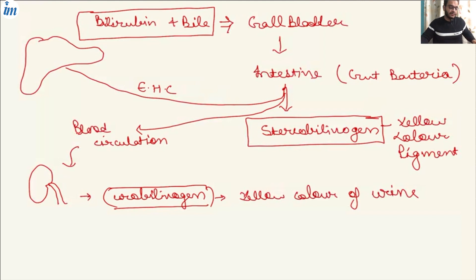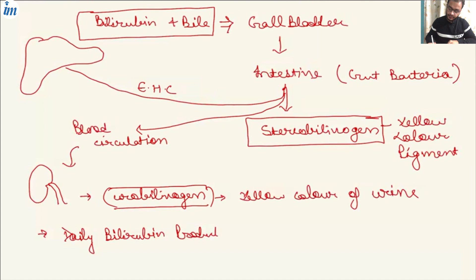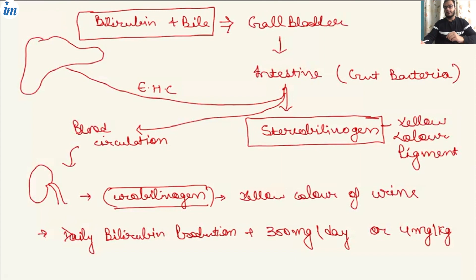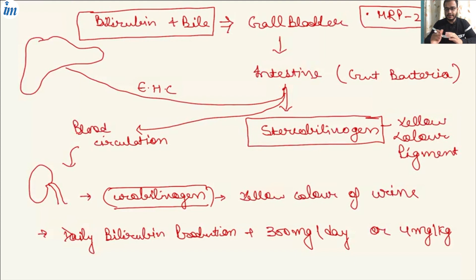Some points to remember: daily bilirubin production is 300 mg per day, or 4 mg per kg per day. Also, when conjugated bilirubin goes along with the bile into the bile ducts and gets stored in the gallbladder, one molecule known as MRP2 helps transport the conjugated bilirubin into the bile ducts and gallbladder.